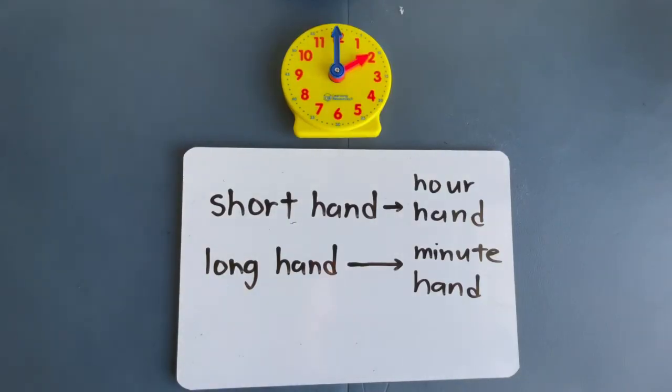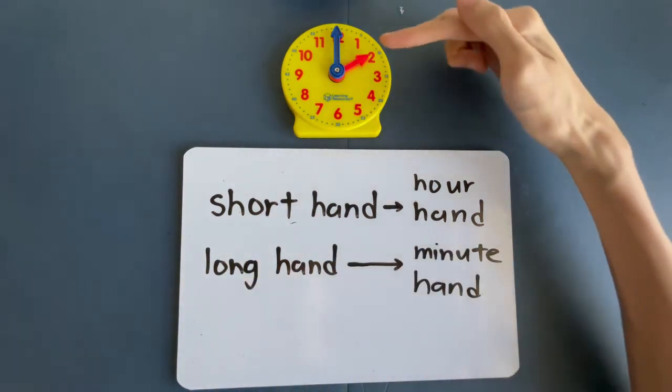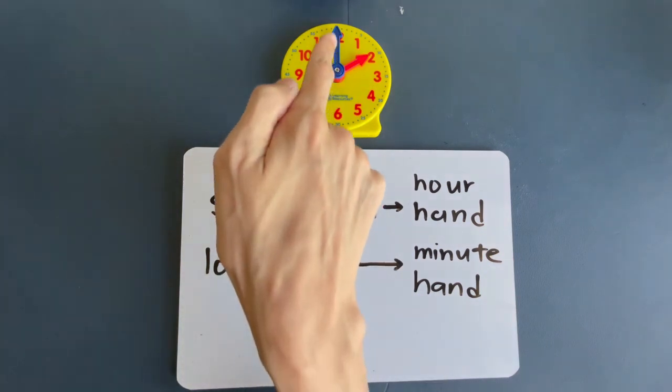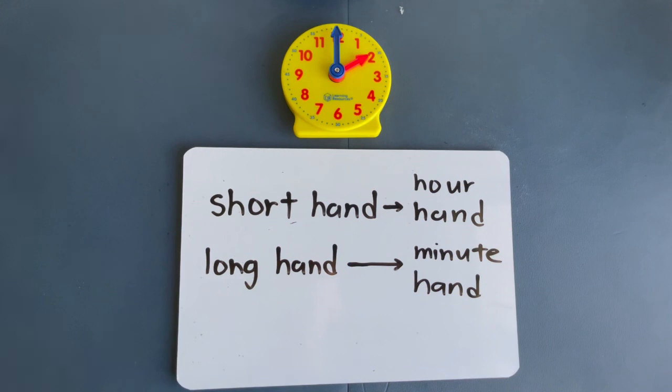So we have come to the end of how to tell the time. Remember, the short hand, the hand over here, is the hour hand. And the long hand is the minute hand, the one pointing straight up at 12. I will see you in the next video.